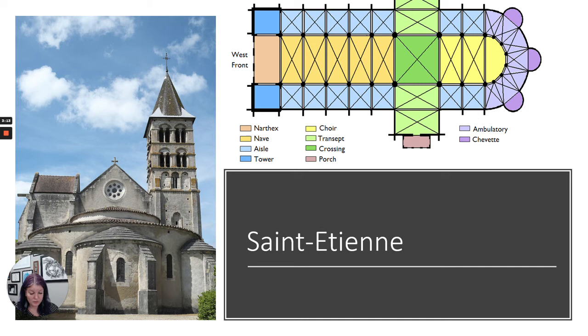Anywhere you see an X on this map means there's a groin vault. So lots of groin vaults, which are aesthetically interesting looking but also very structurally important.